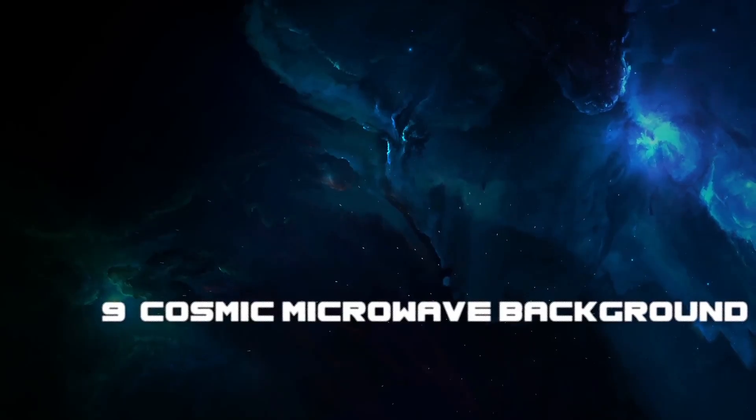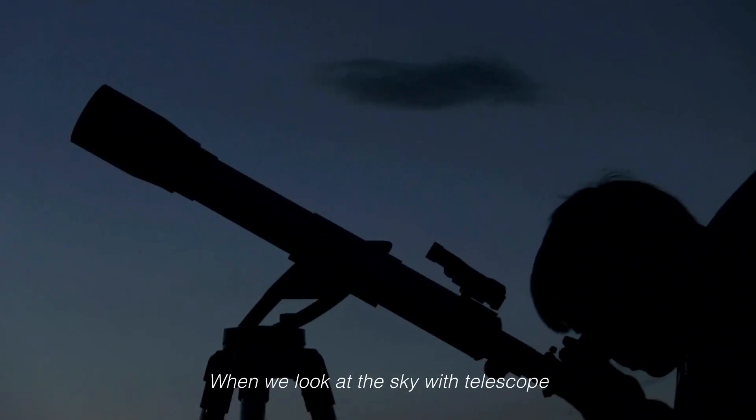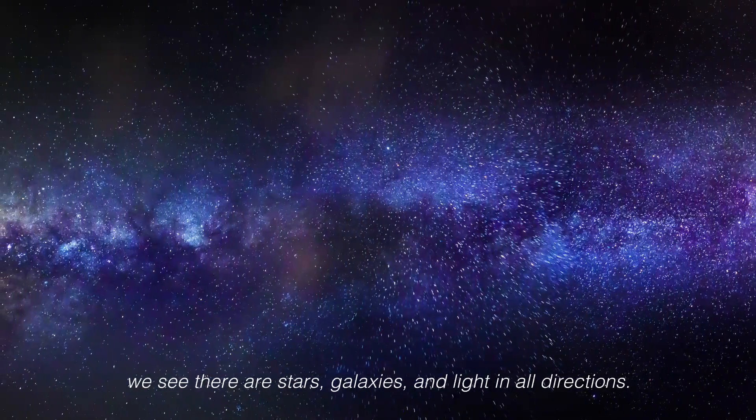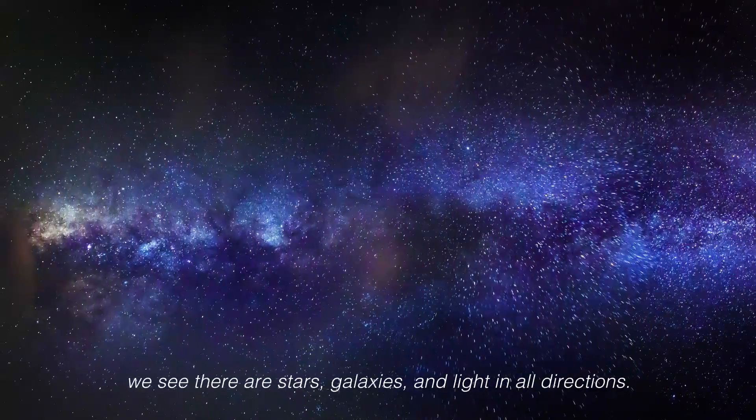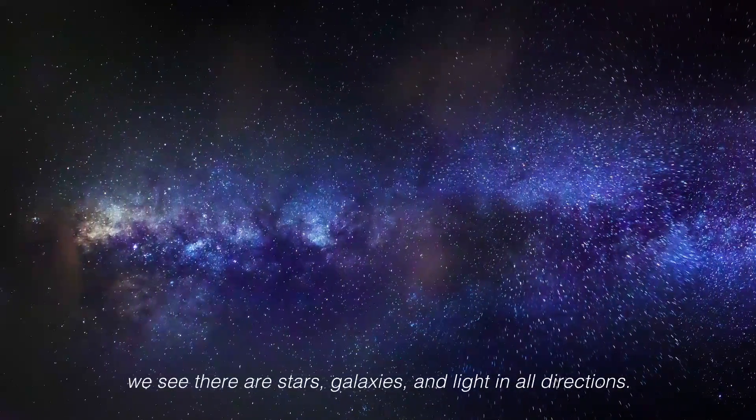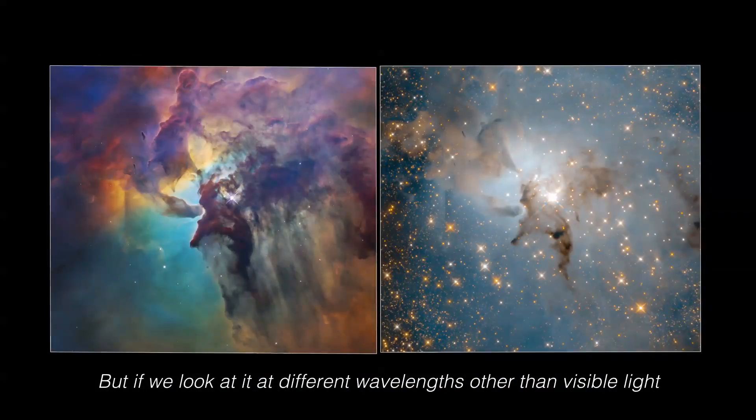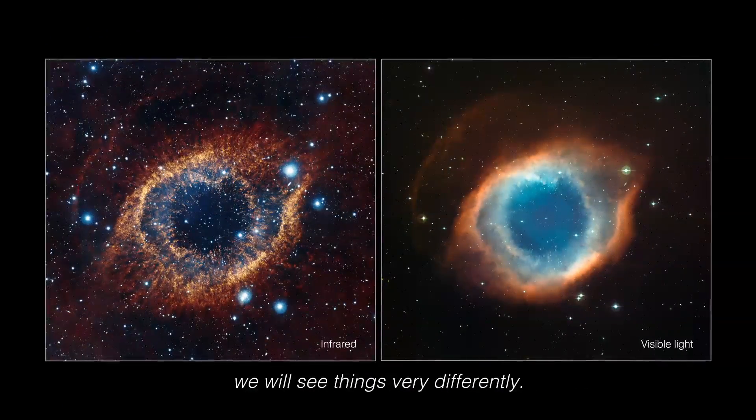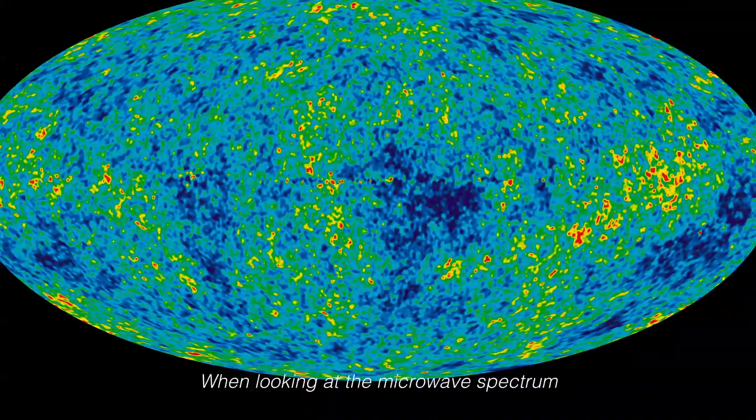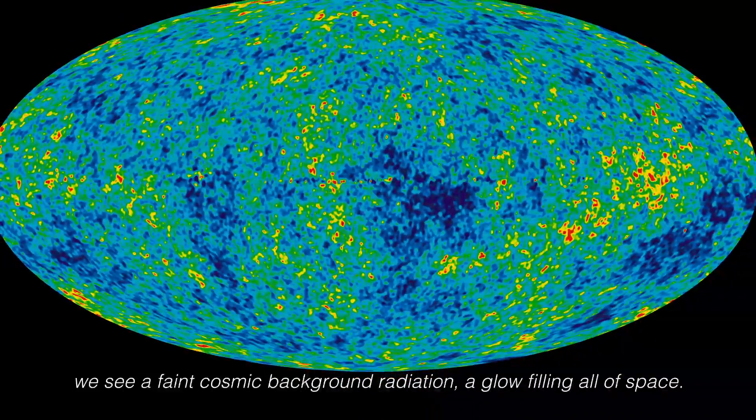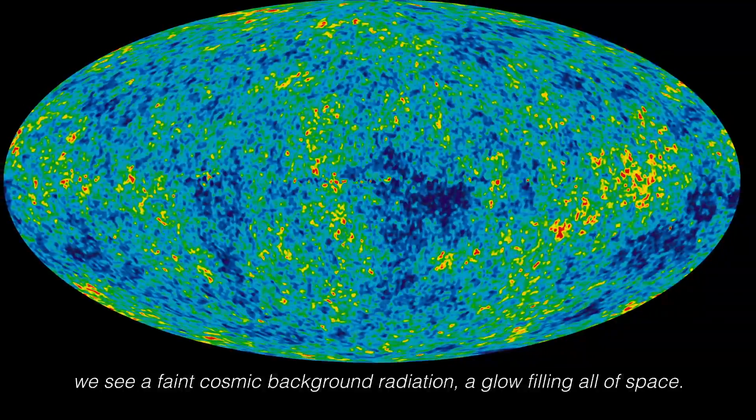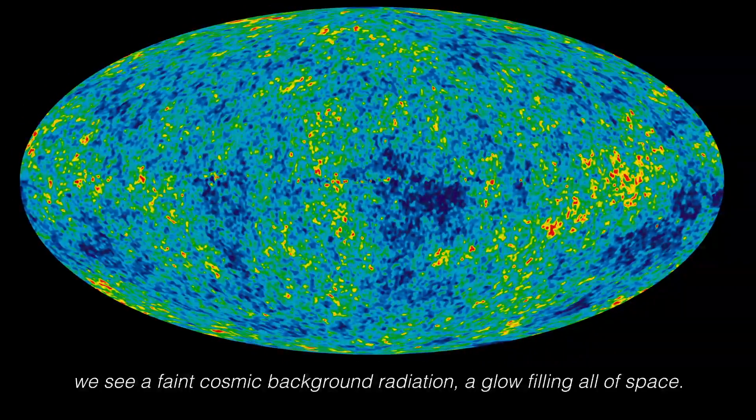Number 9: Cosmic Microwave Background. When we look at the sky with a telescope, we see that there are stars, galaxies, and light in all directions. But if we look at it at different wavelengths other than visible light, we will see things very differently. When looking at the microwave spectrum, we see a faint cosmic background radiation, a glow filling all of space.